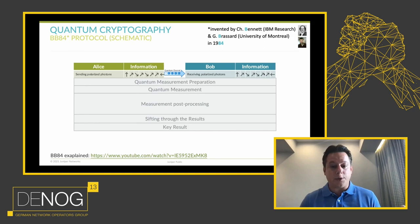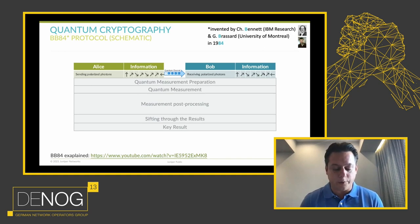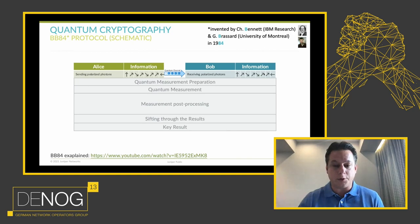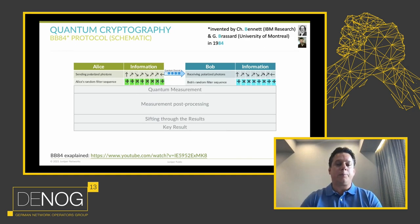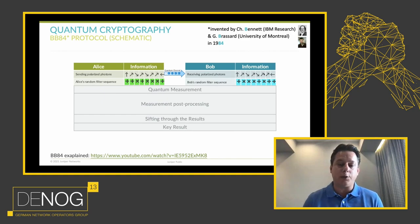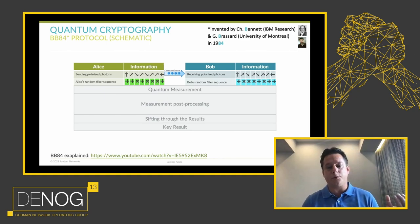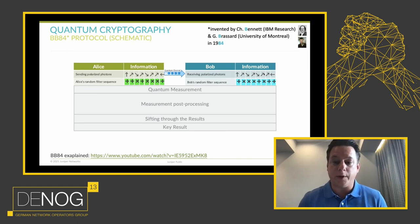Alice uses a quantum channel — basically a dark fiber — to do that. As I mentioned, you cannot amplify that in the current state. So it's a dark fiber between the box on Alice's side and the box on Bob's side. Bob receives those photons and has the photon detector, so he can measure the states of the photons and stores that information. Then because Bob doesn't know upfront which polarization Alice used to send the photon, he applies random filters to the information he receives. The random filter will either pass 0 or 90 degree polarized photons, or 45 and 135 degree polarized photons — as you can see the cross and the plus signal.